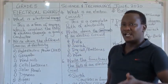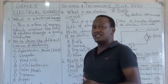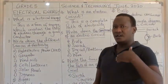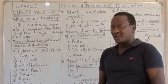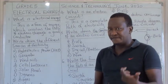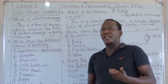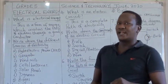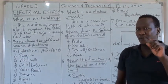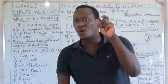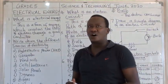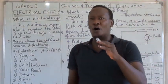Now we are moving a step ahead to the second type of energy which is electrical energy. To begin with, I believe you know what electricity is. Electrical energy is a form of energy that involves what we call the flow of electrons. It involves the flow of electrons.